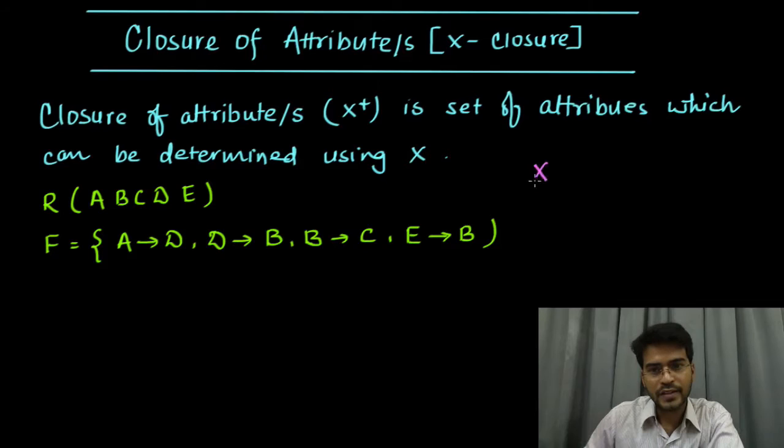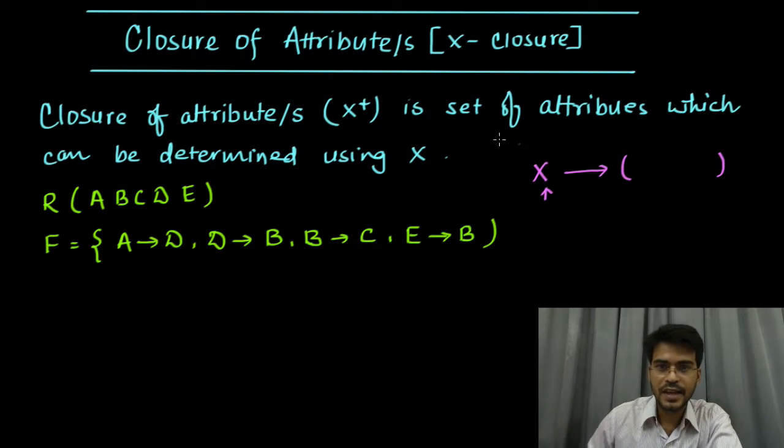What is closure of attribute? Closure of attribute x is the set of attributes which we can determine using this x. This closure is represented as x plus, where plus is in superscript.